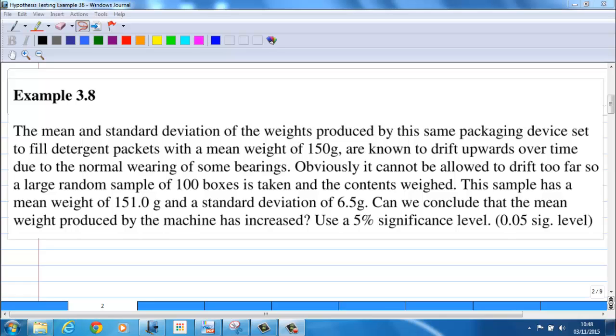Obviously, it cannot be allowed to drift too far, so a large random sample of 100 boxes is taken and the contents weighed. This sample has a mean weight of 151g and a standard deviation of 6.5g. Can we conclude that the mean weight produced by the machine has increased? Use a 5% significance level or 0.05 significance level.